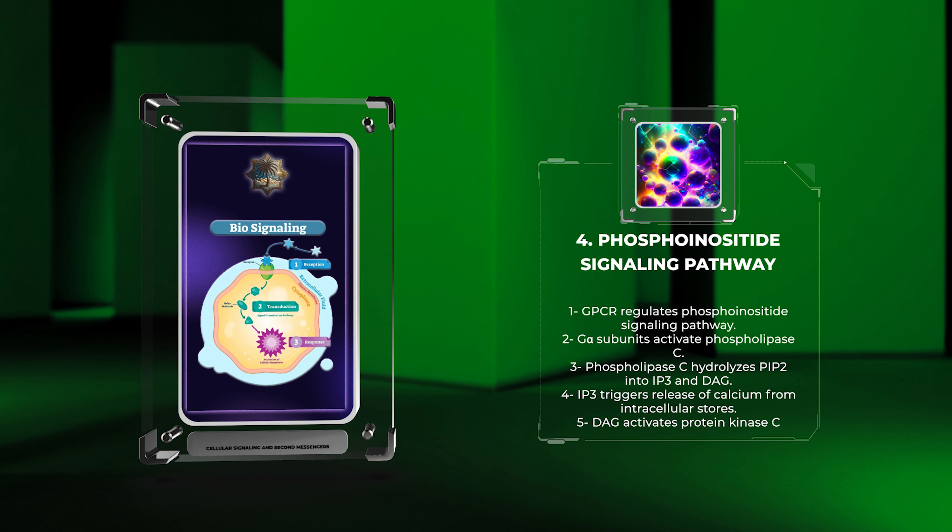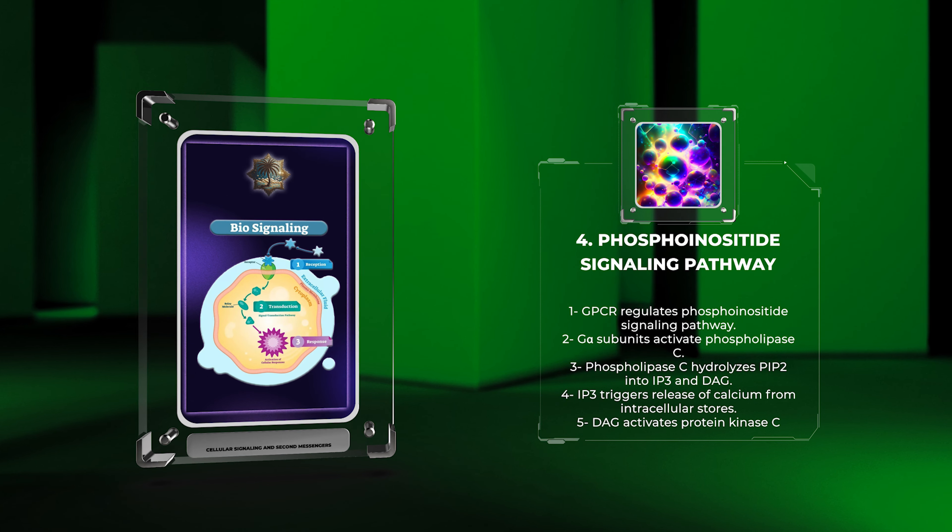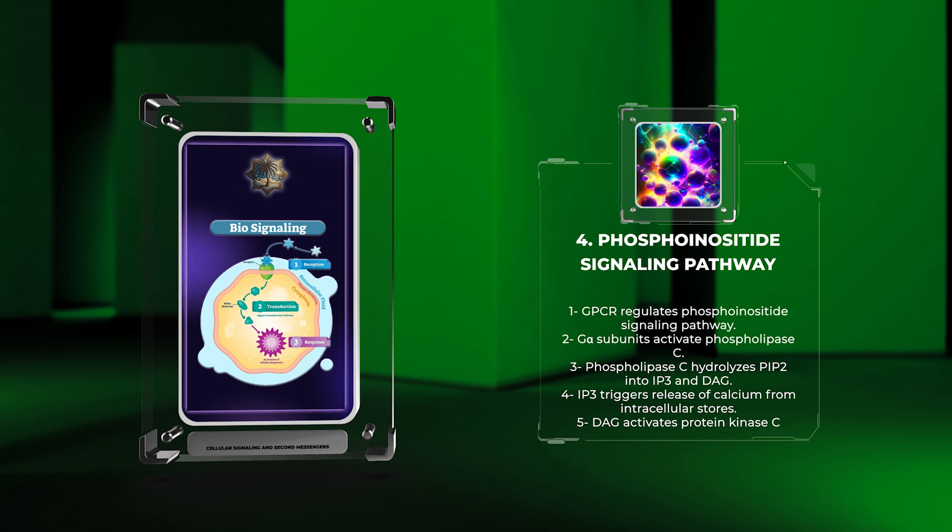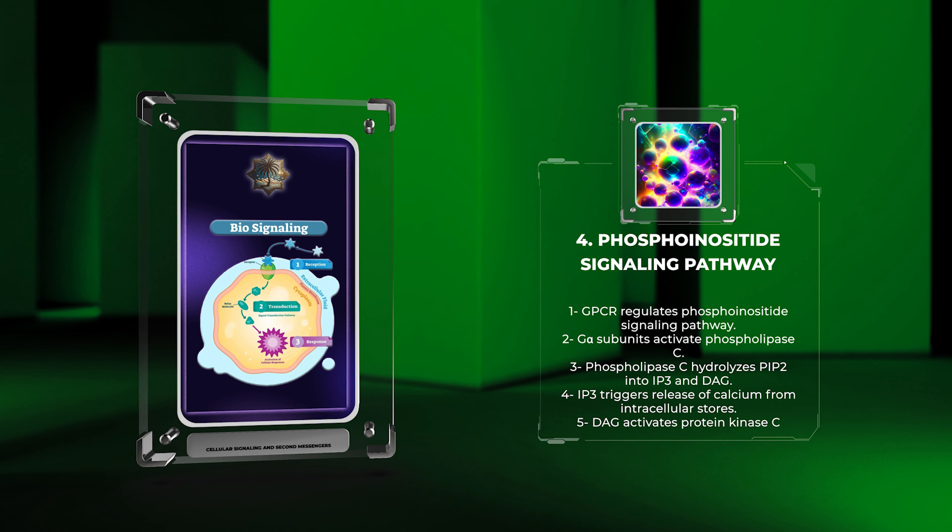IP3 triggers the release of calcium from intracellular stores, leading to various cellular responses, while DAG activates protein kinase C, PKC, which phosphorylates target proteins involved in cell signaling and gene expression.